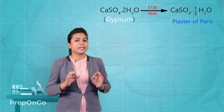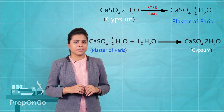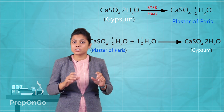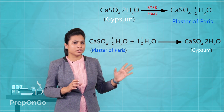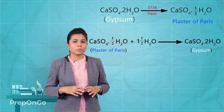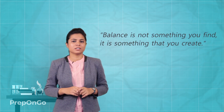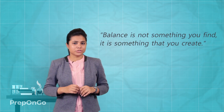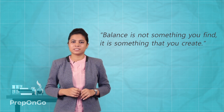We can easily get gypsum back by adding water to plaster of Paris, so we can say that it is a two-way process. Heating gypsum gives us plaster of Paris, and adding water to plaster of Paris gives us gypsum back. This brings us to the end of this chapter. Remember, balance is not something you find — it's something you create. Applying this to chemistry, it is necessary to maintain a balance between acids and bases.